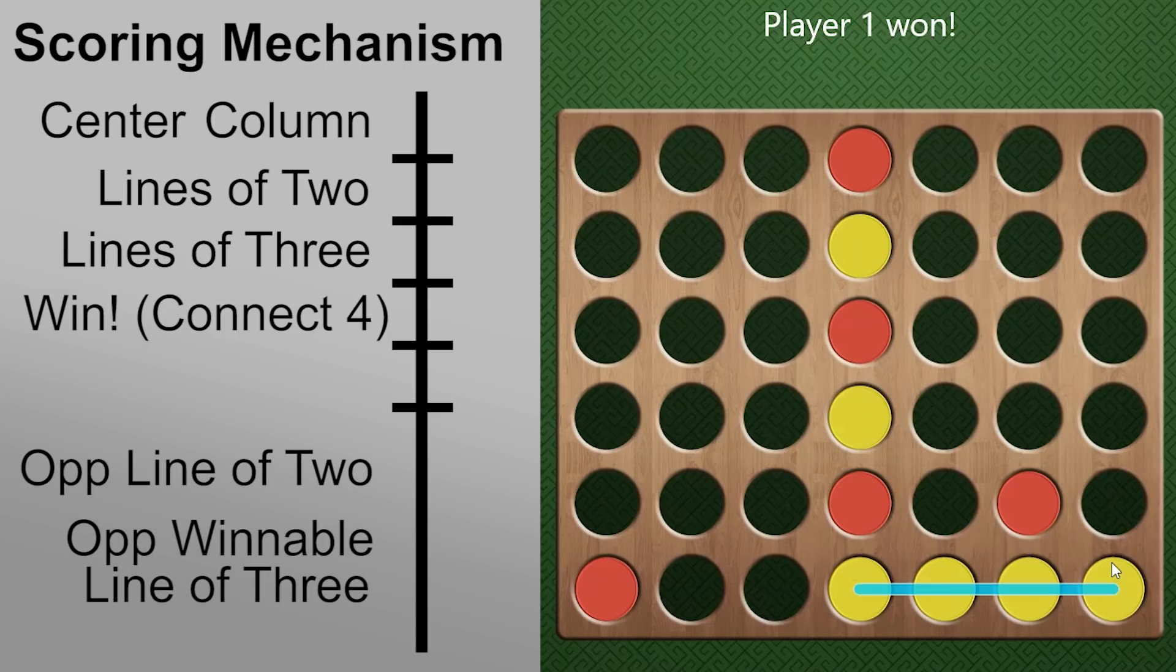Opponent line of two is just the reverse of our line of two. And then opponent winnable line of three is when the opponent has three pieces in the same direction with the fourth move being possible on their next turn.